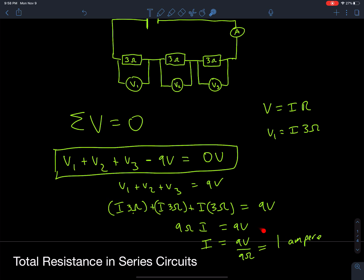Let's break down what just happened. We applied Kirchhoff's voltage law to create a statement, then used Ohm's law to express each voltage as the total current times each resistance. Substituting and collecting like terms allowed us to solve for the current, which is 1 ampere.